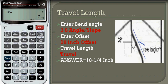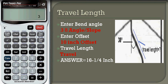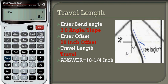For the travel length for the offset having a 38-degree bend angle: clear first, then enter 38 degrees as the bend angle — it stores the value. Enter the 10-inch offset, then press travel to find the center-to-center travel length. The answer is 16 and 1/4 inches.